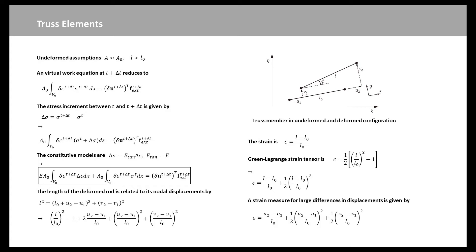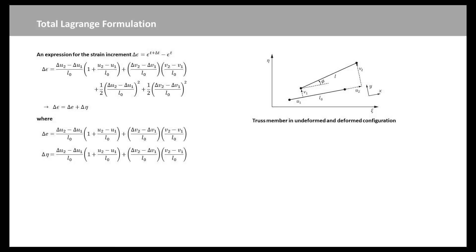A strain measure for large differences in displacements can be derived as this equation. With aid of the strain equation, we can formulate an expression for the strain increment delta epsilon equal to epsilon t plus delta t minus epsilon t. To maintain a straight analogy between the present treatment of truss element, we will formally split the strain increment delta epsilon into a part delta e that is linear in the displacement increment, and a contribution delta eta that is quadratic in the displacement increment.